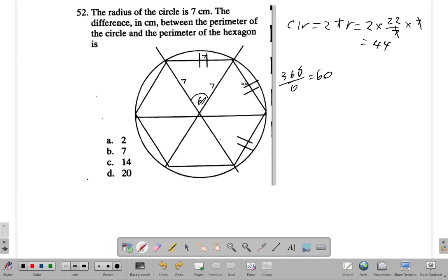If you consider this as 7 and you have 6 of them, then the perimeter of the hexagon would be 7 times 6, which is 42. And 44 minus 42 would be 2. But anyway, let's be accurate about it. Here.